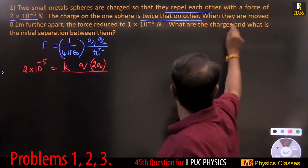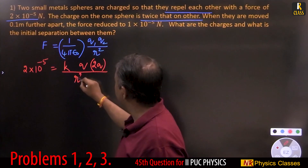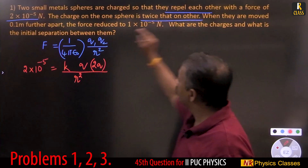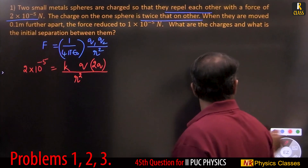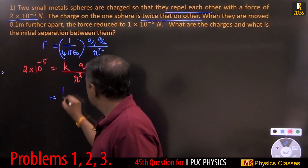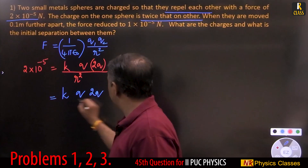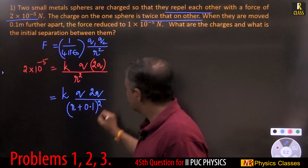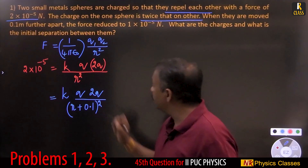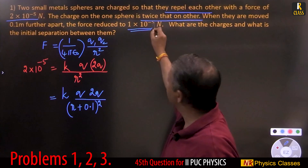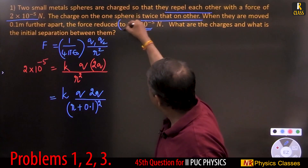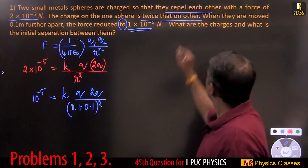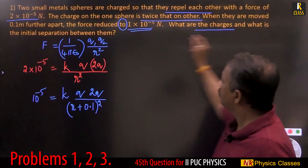The distance is r, and this is an inverse square law. When they are moved 0.1 meter further apart, the same constant k, charges q and 2q remain the same, but the distance becomes r + 0.1. When the distance is increased by 0.1 meter, the force reduces to 1×10⁻⁵ Newton. This is the final force.